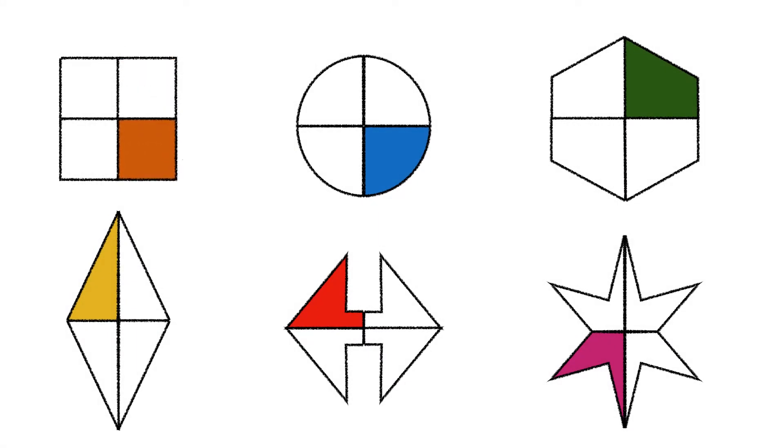These shapes have all been cut into four parts. All four parts of each shape are the same size. They have been cut into quarters. One quarter of each shape is coloured in.